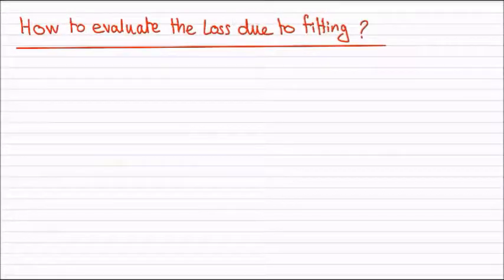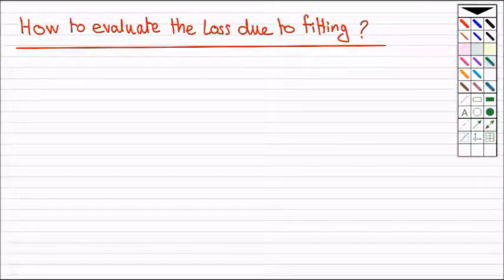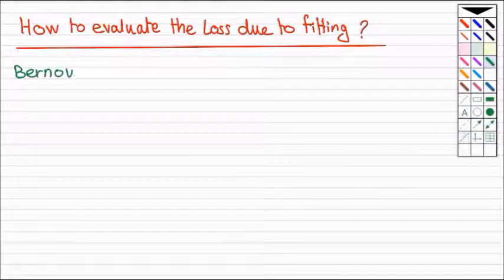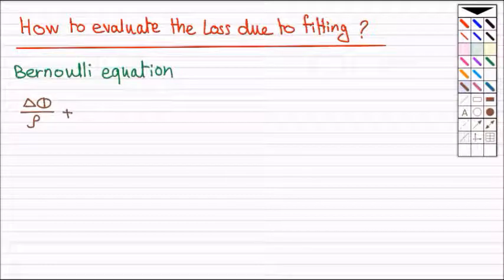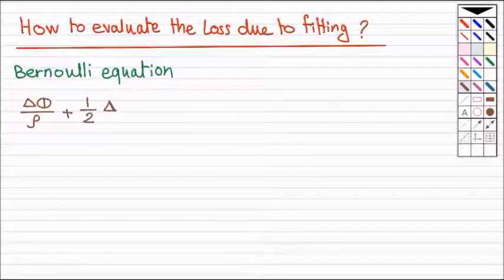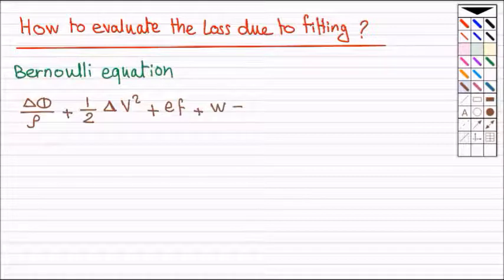Let's write the energy balance equation, or Bernoulli equation. Delta phi divided by rho plus half delta v squared plus ef plus w equal to zero.